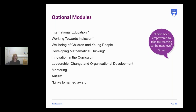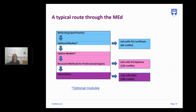The typical route through the MED without credit exemption starts with Reflecting Upon Practice and finishes with the Dissertation, with the two optional modules and Research Methods in between. You can exit at certificate level, diploma level, or the full master's level. There is a lot of flexibility, and the team at Stafford Associates will help you understand the route that's best for you.